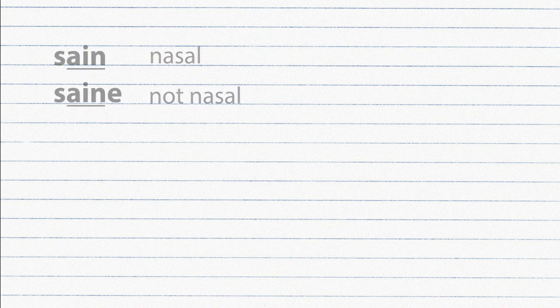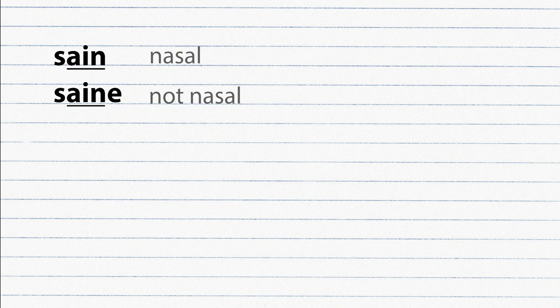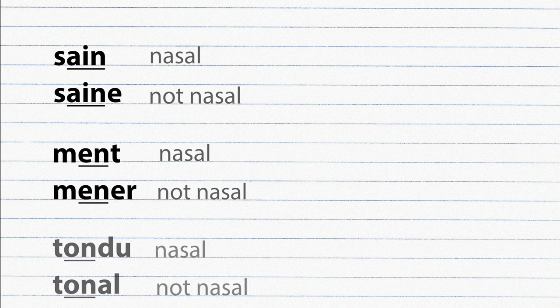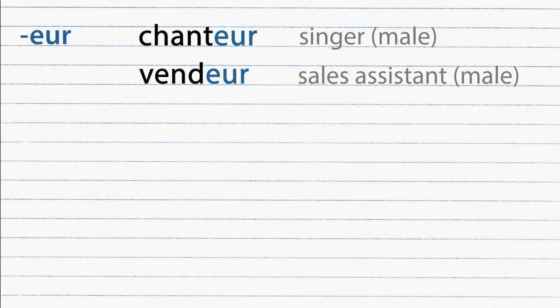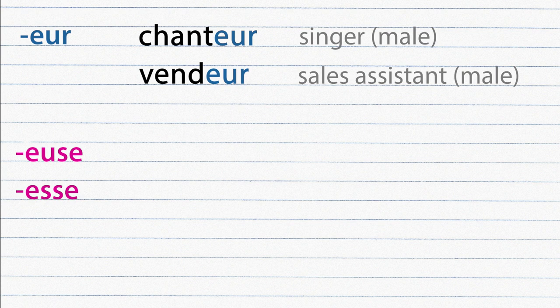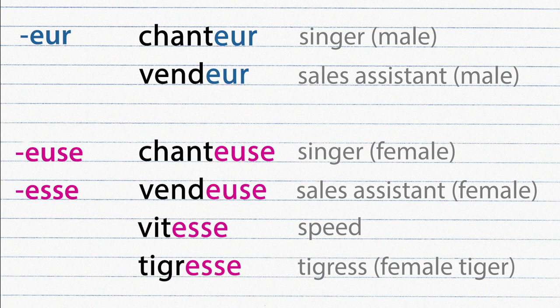Gender. In French every noun is either masculine or feminine. We can often recognize the gender of a noun by its ending. EUR is a typical ending of masculine nouns, for example chanteur, vendeur. And the following endings are typical of feminine nouns: chanteuse, vendeuse.